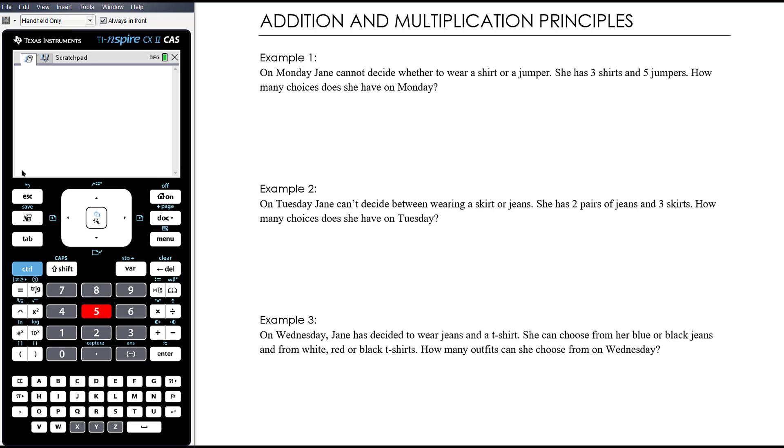Let's think through these examples and then draw together the ideas. On Monday Jane can't decide whether to wear a shirt or a jumper. She has three shirts and five jumpers. How many choices does she have on Monday? She's going to wear a shirt or a jumper, which means she has a total of 3 plus 5, that's 8 choices. She won't wear a combination of them—she's deciding whether to wear a shirt or a jumper, so in total she's got eight choices.